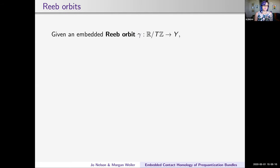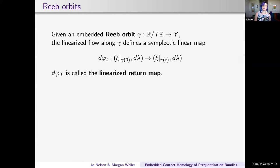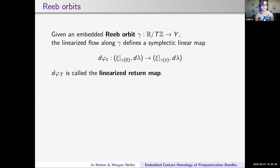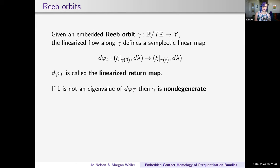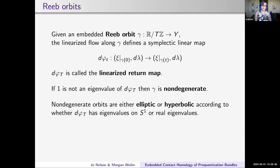Given an embedded Reeb orbit, we look at the linearized return map associated to the orbit—a symplectic linear map obtained by restricting d of the flow to the contact hyperplanes. For t between zero and big T, that gives us an arc of symplectic matrices. At time T, the period, we look at the eigenvalues of that map. If one is not an eigenvalue, we say that gamma is non-degenerate. Non-degenerate orbits are either elliptic or hyperbolic, in the dimension three setting, according to whether you have eigenvalues on S¹ (elliptic) or real eigenvalues (hyperbolic).